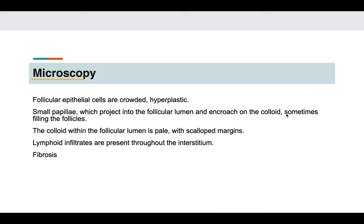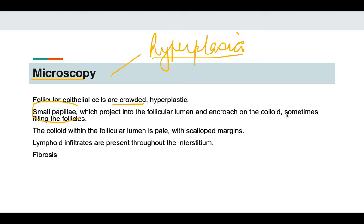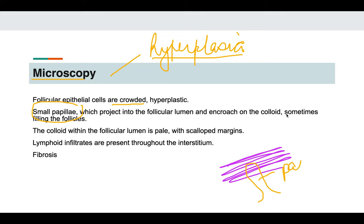On microscopy, there is hyperplasia — increased number of follicular epithelial cells that appear crowded under the slide. Sometimes small papillae are also present, where the thyroid follicular epithelial cells are so proliferated that they assume a papillary shape. These papillae have no fibrovascular core, unlike papillary carcinoma which will be discussed later.